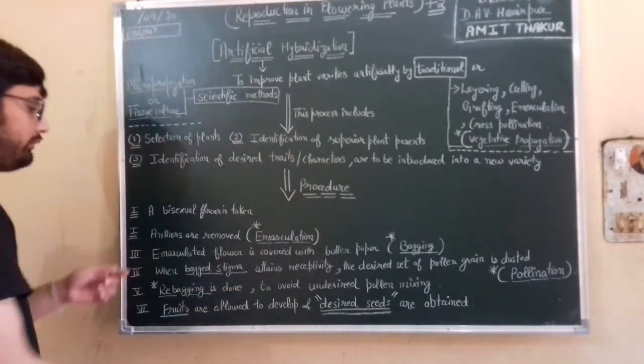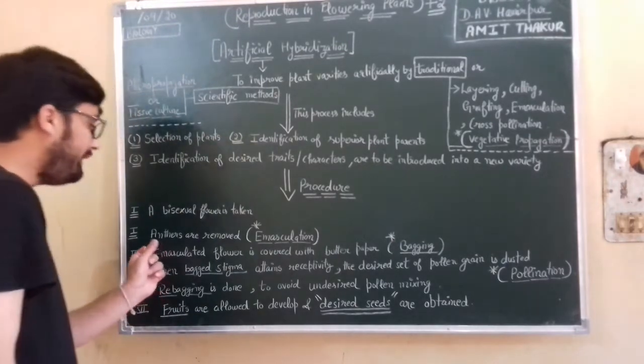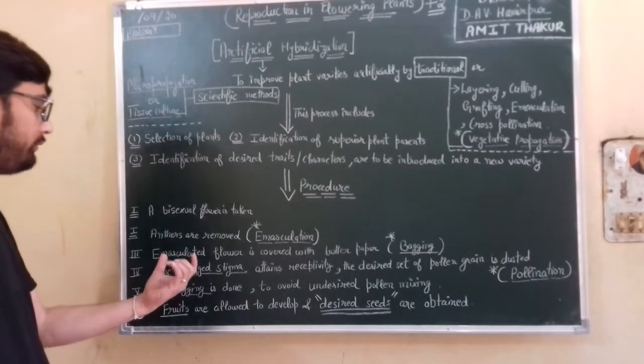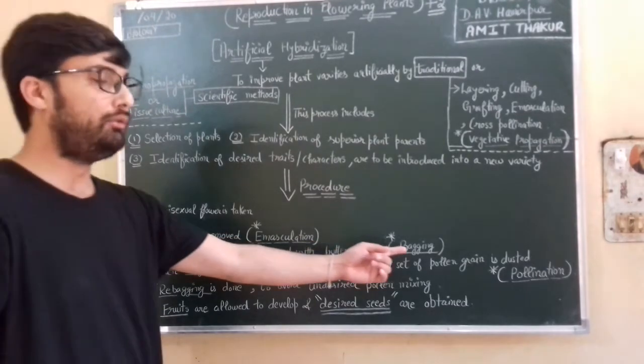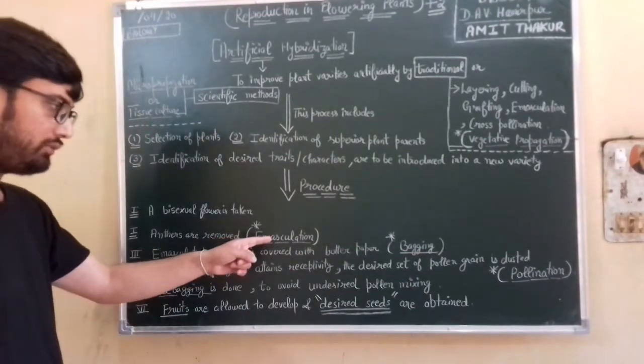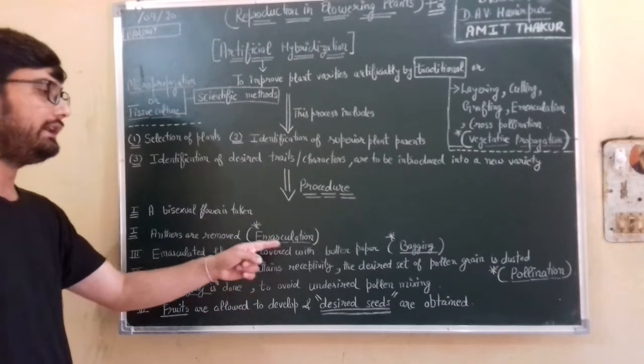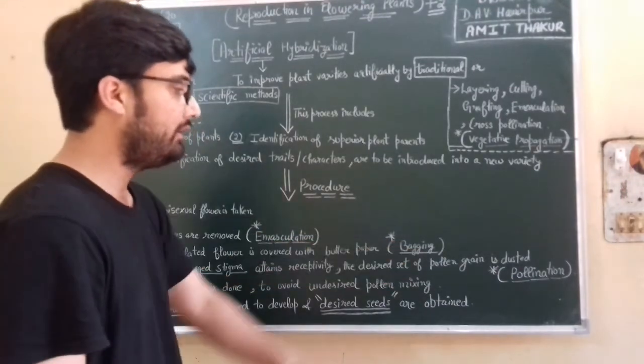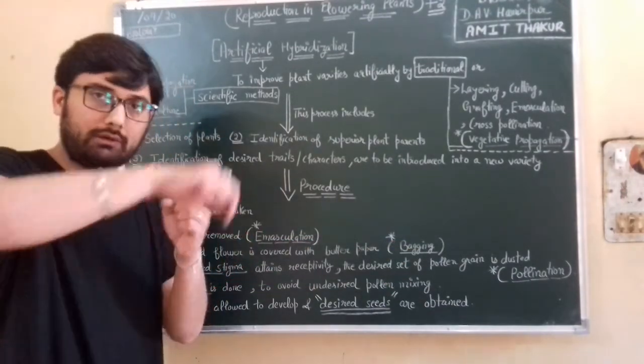So we have covered it. When we cover that emasculated flower, what do we say? Bagging. So what do we say? Emasculation - anthers will be removed. Then what do we say? Bagging - that emasculated flower will be covered.